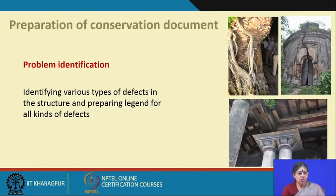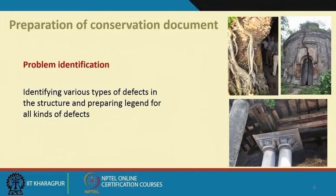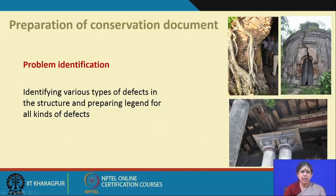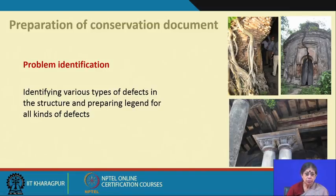The measured drawing also becomes a source for problem identification. With the help of the measured drawing and other types of research, one can identify different types of defects and make a legend of those defects seen in the structure — for example, a root growing over a tree supporting the structure, or a major crack. Recording the crack, its position, vegetation growth, missing tiles, and plaster issues — all of this must be done after preparing the measured drawing to understand what is the problem of the building.